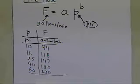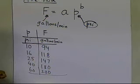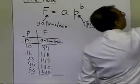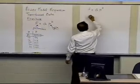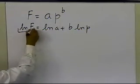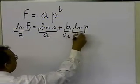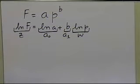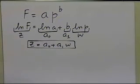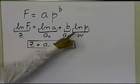Keep in mind that we are not linearizing the model itself. We're going to transform the data so that we can use the linear regression formulas to find the constants. If we have f equals a times p raised to the power b, taking the log of both sides gives log(f) = log(a) + b·log(p). We substitute z = log(f), a0 = log(a), a1 = b, and w = log(p). So z is the log of the flow rate values and w is the log of the pressure values.